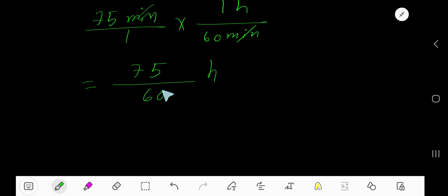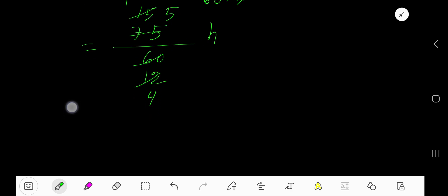Divide this by 5, you will get 15. Divide this by 5, you will get 12. Divide this 15 by 3, you will get 5. Divide this 12 by 3, you will get 4. So 5 over 4 hour.